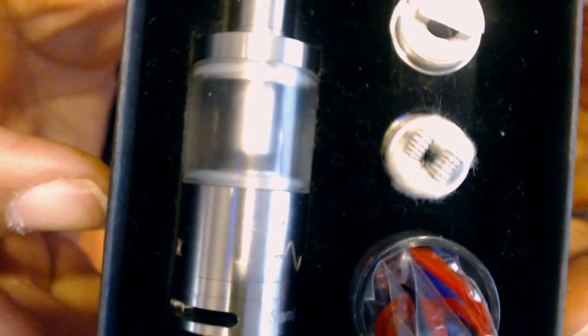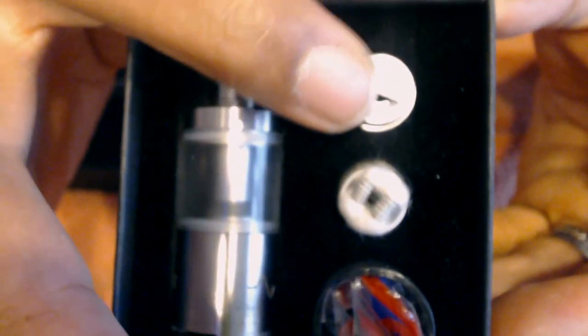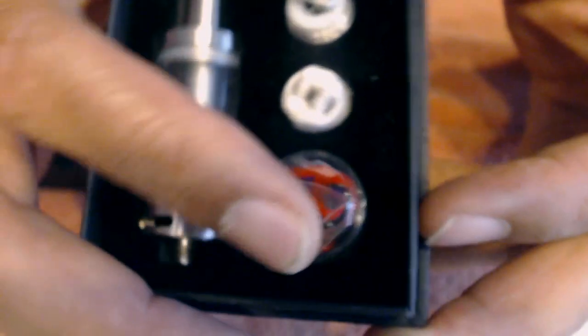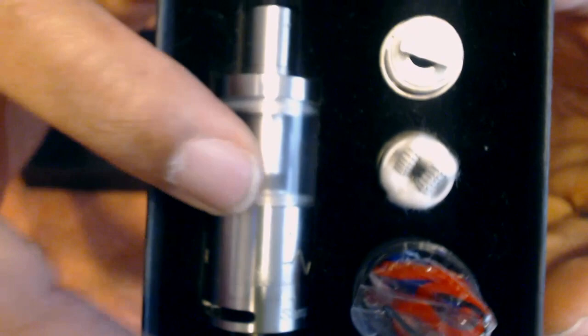It has a little silicone plug and it goes on to tell you the juice capacity. It has ceramic on the OCC pre-built coil heads. In the package you get the guy Goliath, two pre-built coils, spare glass, different color O-rings, and a plug to make it a single coil.